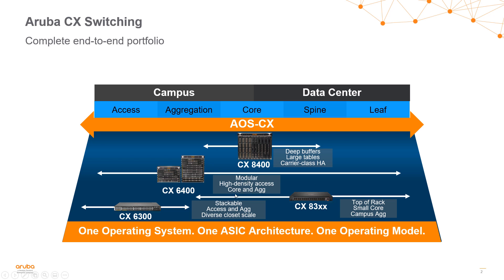At the access layer, we have our CX 8300 top-of-rack series for data centers and our CX 6300 series, which are targeted for campus access and aggregation, as well as out-of-band networks within data centers. All of these switches from end to end operate with one operating system, one ASIC architecture, and one operating model.